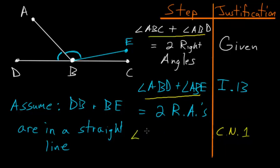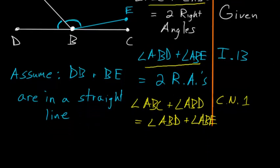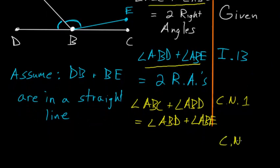So let's write that down: angle ABC plus angle ABD must equal angle ABD plus angle ABE. From here we can see that each side of this equation has the angle ABD, and we can use common notion number 3 to subtract off the angle ABD from each side. So what we're left with is that the angle ABC is equal to the angle ABE.